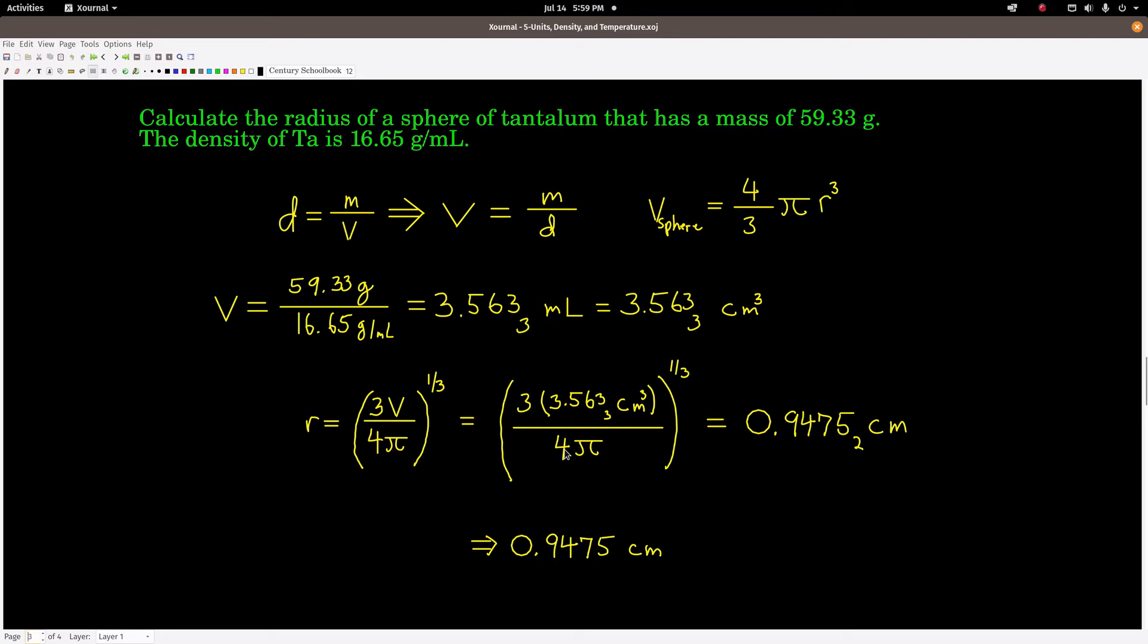Now we use the volume of a sphere formula, solve for the radius, which is three times the volume over four pi, cube root. Plug in three, our volume we just got, four pi. Multiply it out, divide, take the cube root, and we get the result, 0.9475 centimeters, and we have the radius of the sphere.